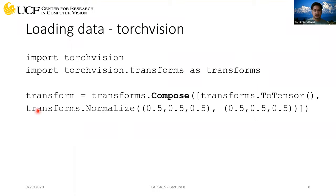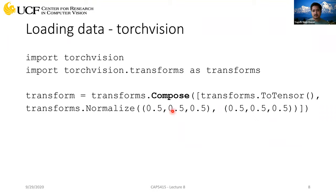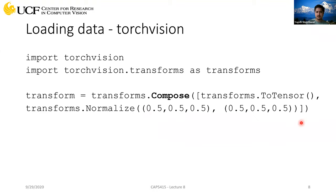The normalization parameters are mean and standard deviation. Since CIFAR-10 has RGB images, there are three values — one per channel. Your initial pixel data will be between zero and one. If you apply normalization with mean 0.5 and standard deviation 0.5, it will transform the data to be between negative one and one.